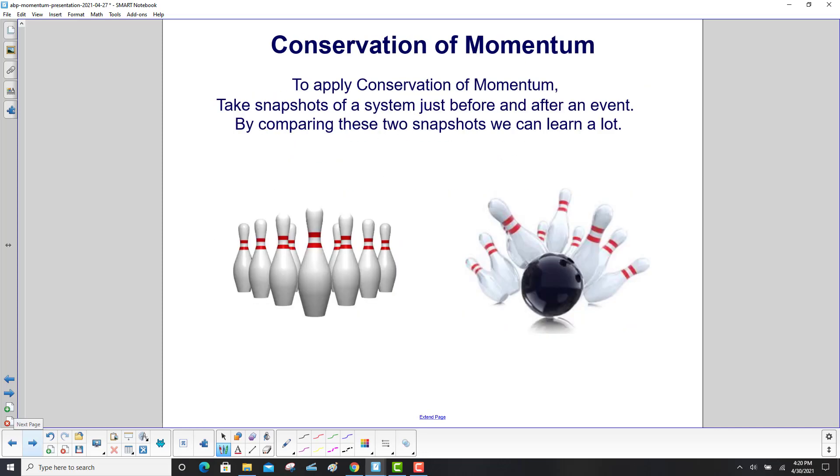To apply conservation of momentum, take snapshots of a system just before and after an event. By comparing these two snapshots, we can learn a lot without worrying about what happened in between them.